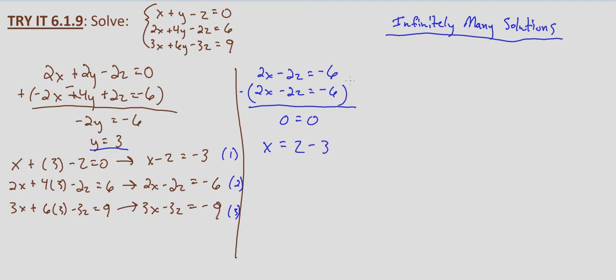So what these infinitely many solutions are: x equals z minus three, y equals three, and z equals any arbitrary real number.